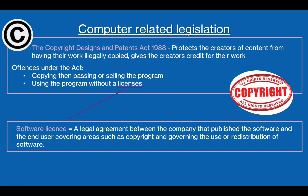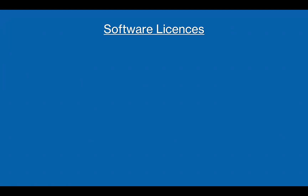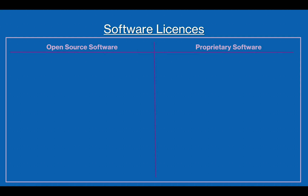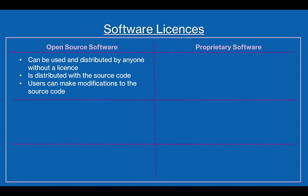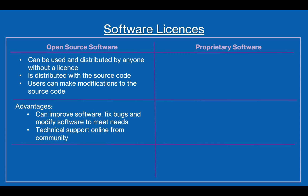A software licence legally allows users to use the software whilst protecting the creator's copyrights. There are two types of licensing: open source and proprietary, which is closed source software. Open source software can be used and distributed without a licence. It is software where the source code is made freely available to be viewed and edited by anyone. This means that users can modify the software to suit their needs and to fix bugs. However, there may be lower security, as it may not be developed in a controlled environment.